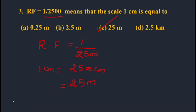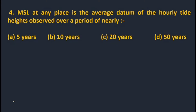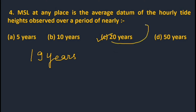Question four: Mean sea level at any place is the average of hourly tide heights observed over a period of nearly 19 years. As discussed in the leveling chapter, MSL uses 19 years of data. Since 19 years is not given in the options, the most appropriate answer is 20 years.